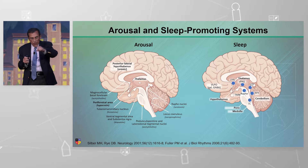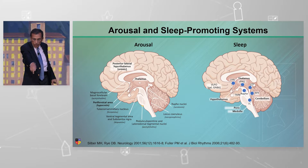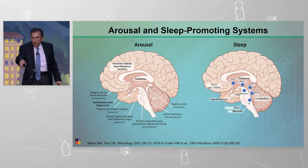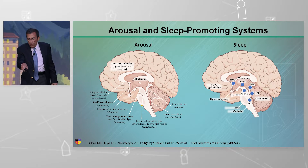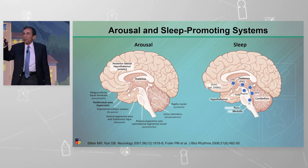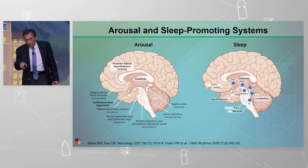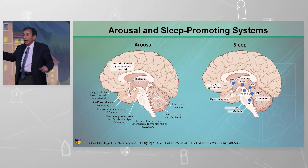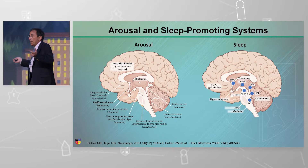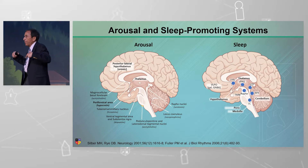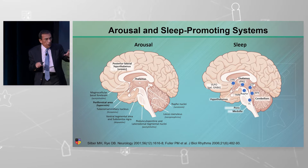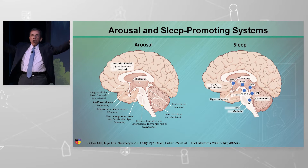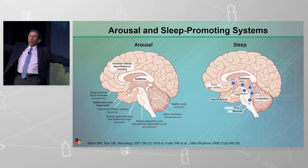Why is that important? Let's go to the next diagram on the right side — that's the sleep system. The most important part of that whole sleep system is the VLPO, the ventral lateral preoptic nucleus. That contains GABA — gamma-aminobutyric acid — the inhibitory neurotransmitter of the brain. That's the system that puts us and keeps us asleep. These two systems are basically in balance with one another.